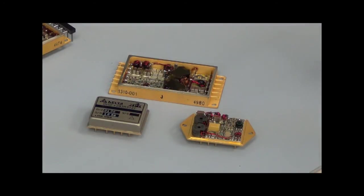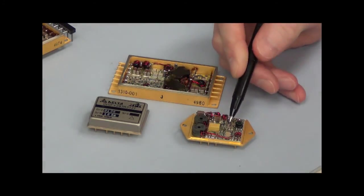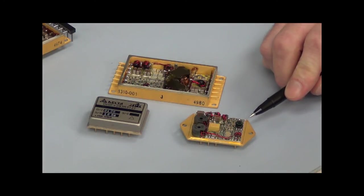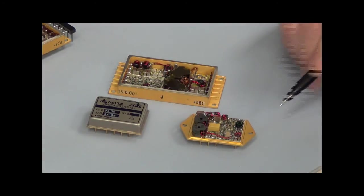If we take a look at the open hybrid DC-DC converter, we can see the basic construction. There's bare semiconductor die mounted to a thick film ceramic substrate which is mounted to the header, usually made of steel.